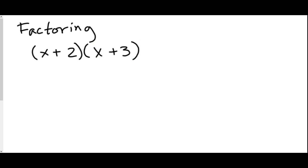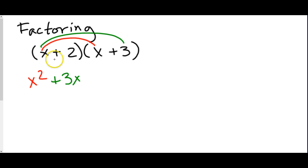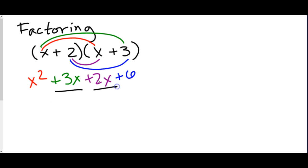When we FOIL, we're multiplying multiple times. x times x is x², x times 3 is 3x, 2 times x is 2x, and 2 times 3 is 6. In this case, there are like terms we can combine — 3x plus 2x is 5x. So factoring, again, is backwards of this — it's a form of division because FOILing is a form of multiplication.